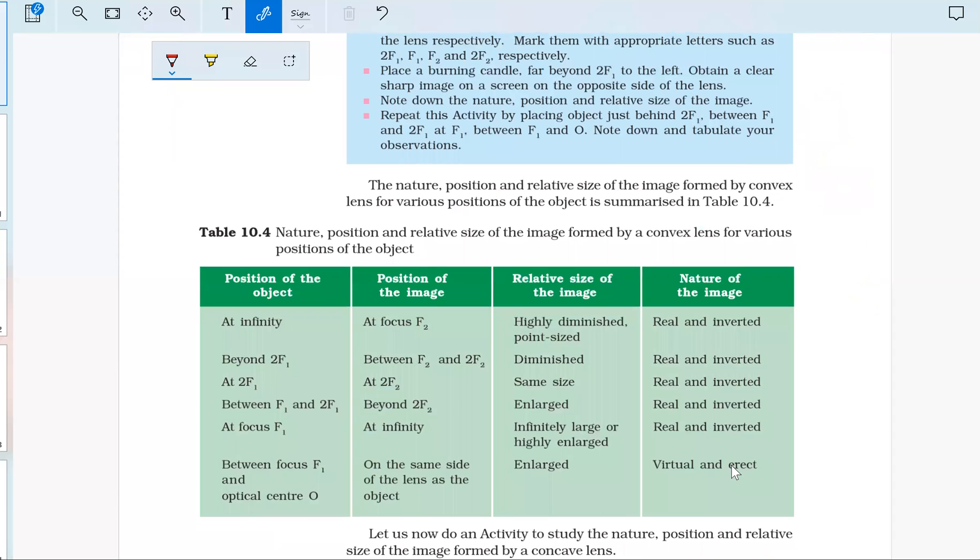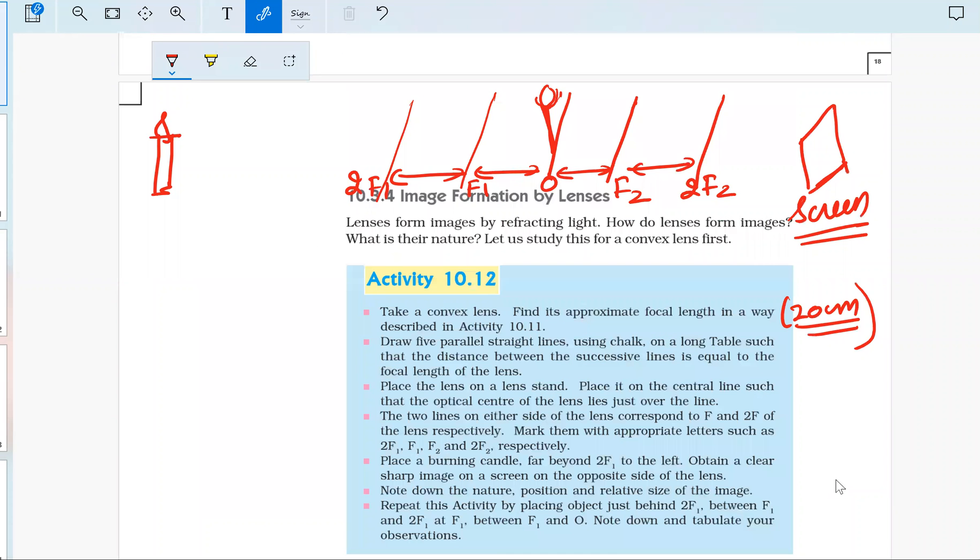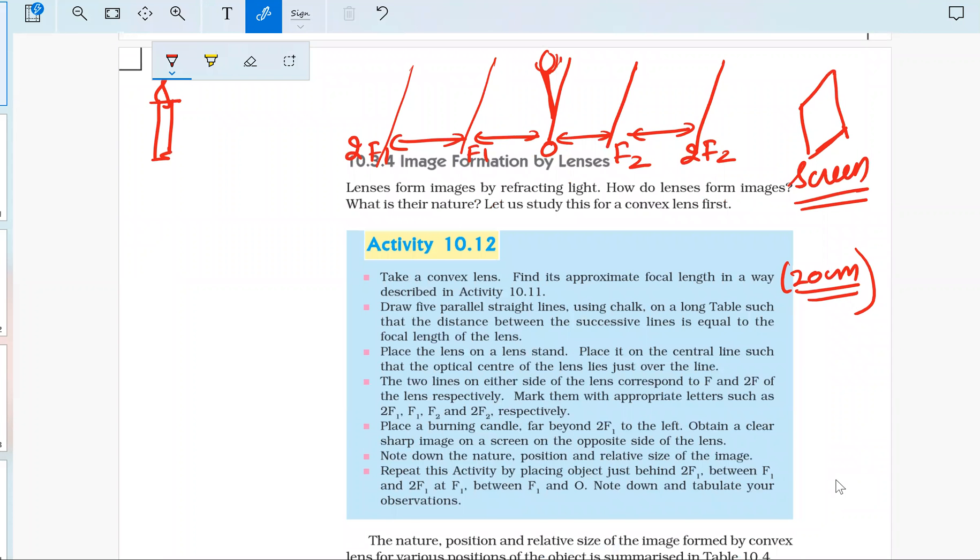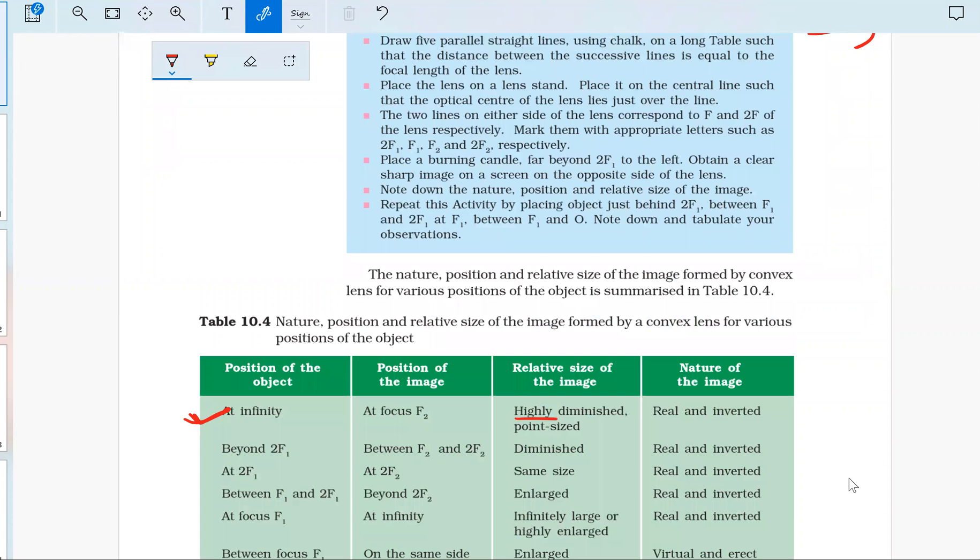This will be the conclusion of this activity. When we place the candle at infinity, the image formed on the screen will be at F2. When the object is at infinity, the image will be formed here. If you place this screen here, you will see the image of the candle. A point-size image will be there, and the image will be real and inverted. That means if the candle flame is this way, you will see it inverted—the black part will be seen at the top and the lighting part at the bottom.